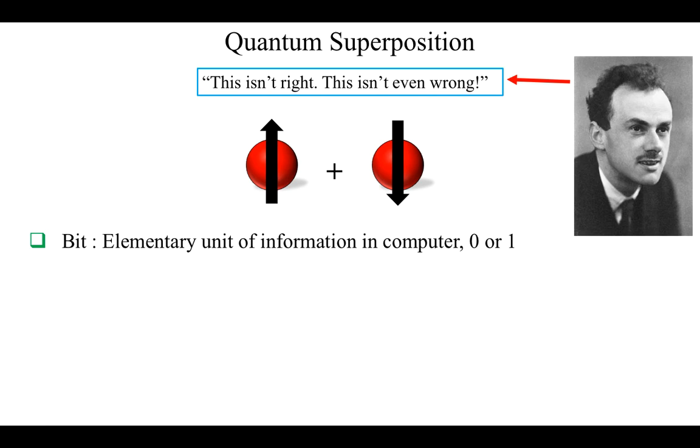A classical bit, which is the elementary unit of information in a classical computer, can be either zero or one. On the other hand, a qubit, which is the elementary unit of information in a quantum computer, is in a superposition of zero and one states at the same time. That's the fundamental difference between a qubit and a classical bit.